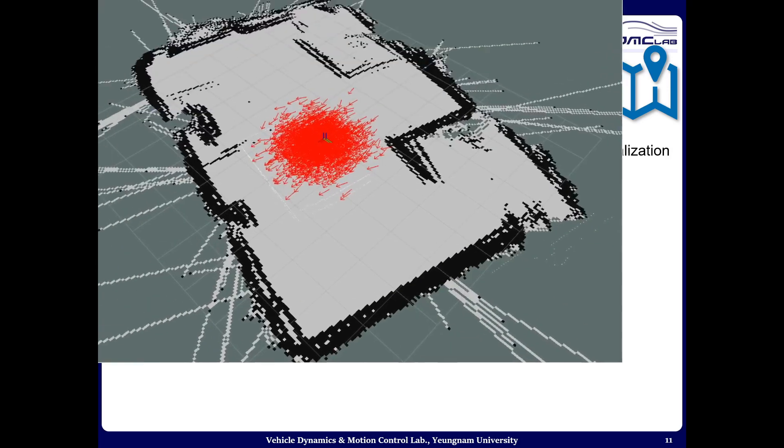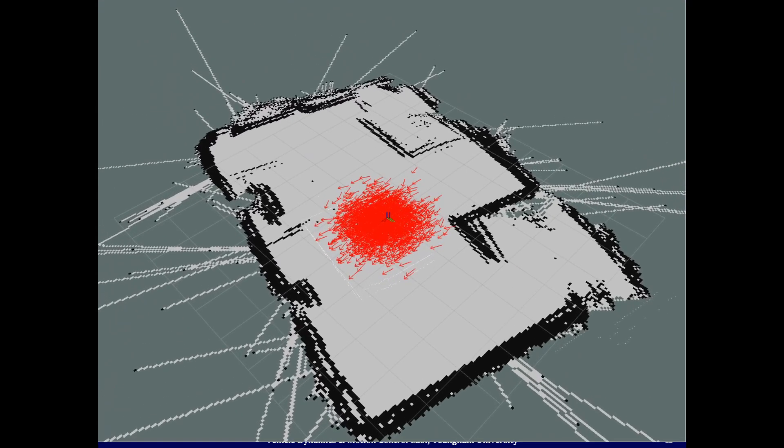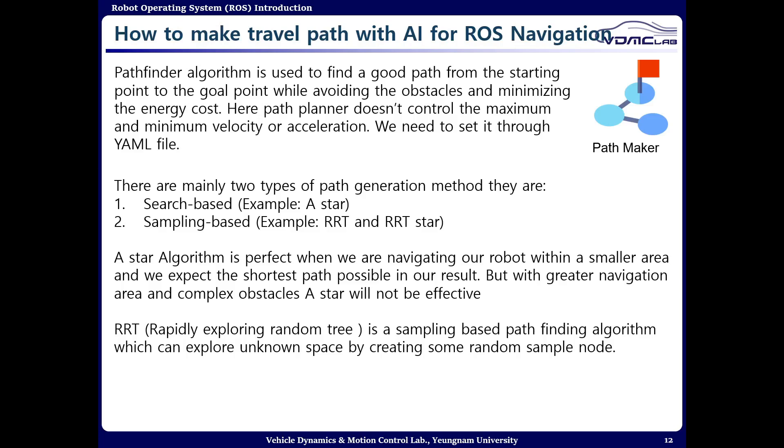This is one example of localization where I have used thousands of particles. The number of the particles can be reduced if we are more accurate about our robot position. This reducing of particles is also called adaptive Monte Carlo localization.